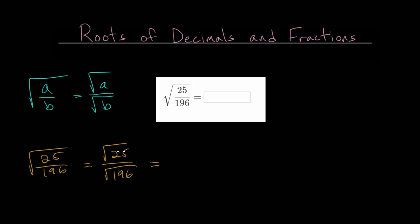Now what number multiplied by itself gives you 25? That is just 5, since 5 times 5 is 25. And in the denominator, what number multiplied by itself gives you 196? Well that's 14. So this is what we think is our answer here.